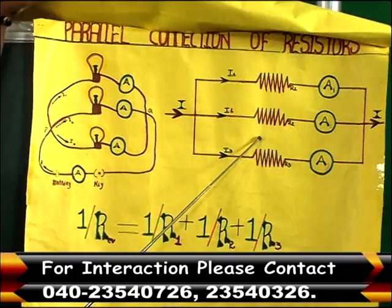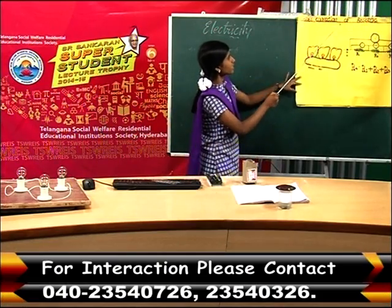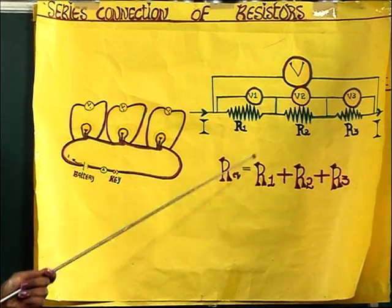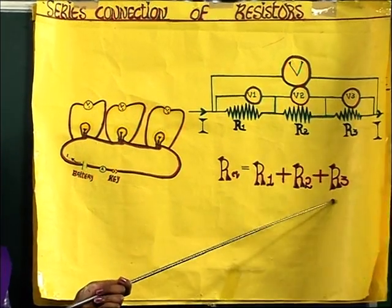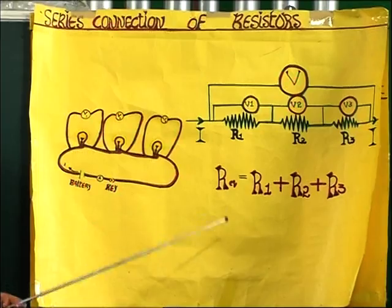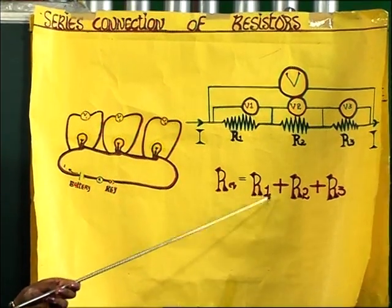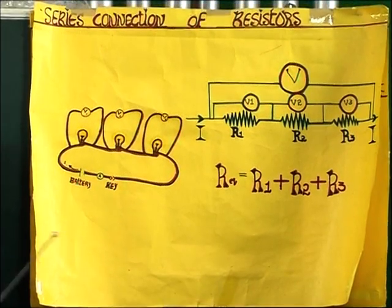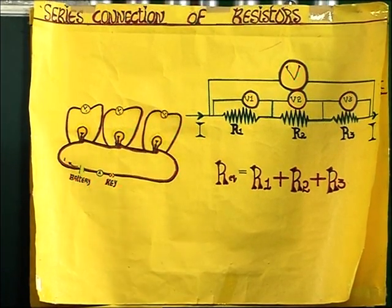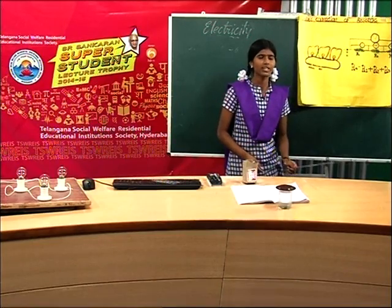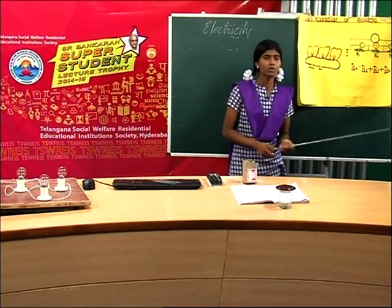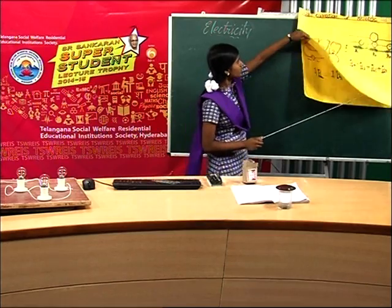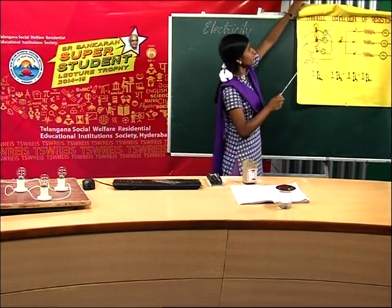According to series connection, the equivalent resistance is equal to R1 plus R2 plus R3. These types of series connections are helpful in Christmas decorating and power decoration, and also for decorating our homes.